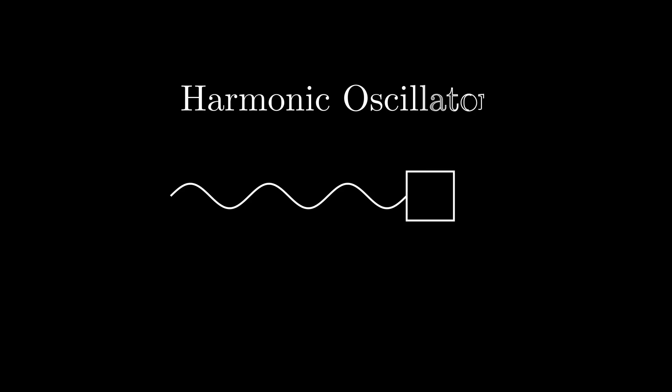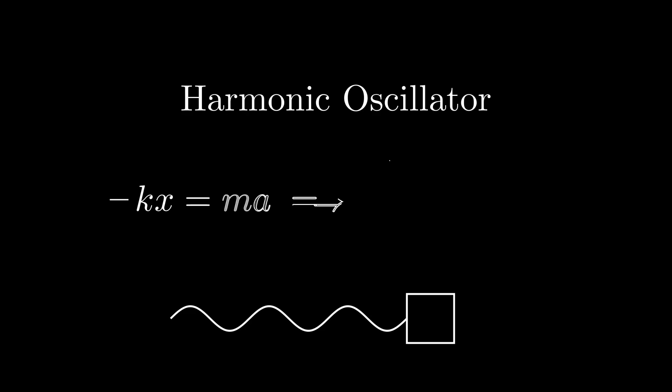And I have a little treat for you if you end up sticking around to the end of the video. A block going back and forth on a spring—this is a classic example known as a simple harmonic oscillator.